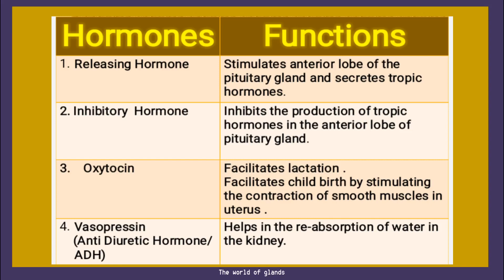First is releasing hormone — it stimulates the anterior lobe of the pituitary gland to secrete tropic hormones. From the name itself we can understand: releasing hormone stimulates the secretion of other glands with the help of the pituitary. Second is inhibitory hormone — inhibition means to stop secretion. It inhibits the production of tropic hormones in the anterior lobe of the pituitary gland — just the reverse of releasing hormone. So releasing hormone stimulates secretion whereas inhibitory hormone stops the production of hormones.